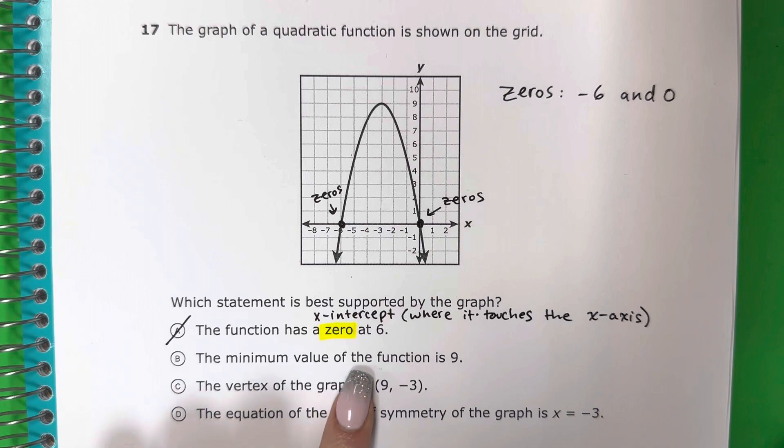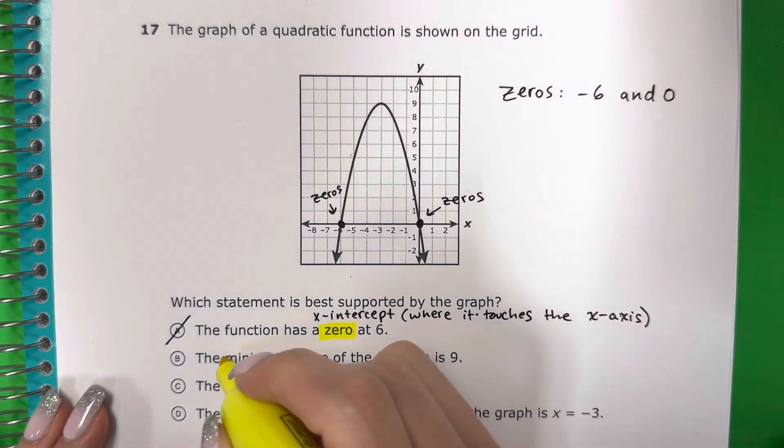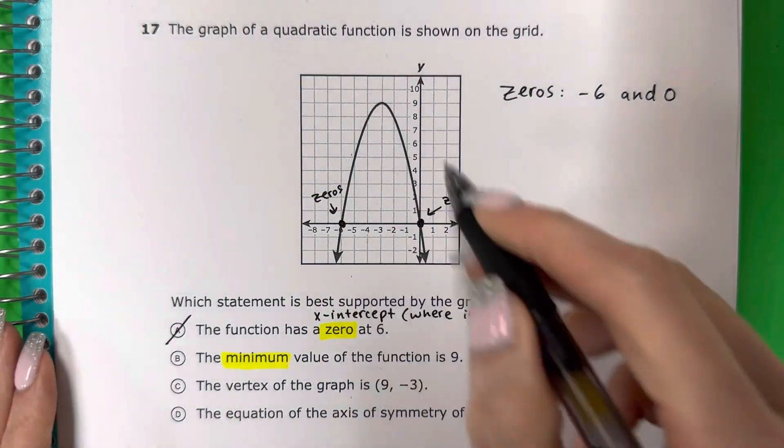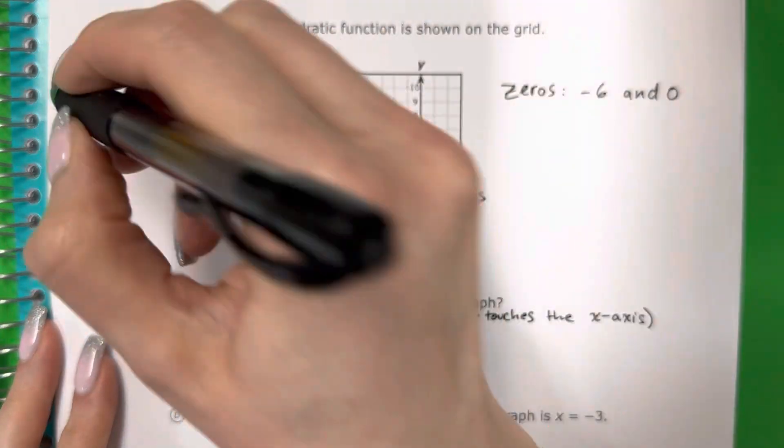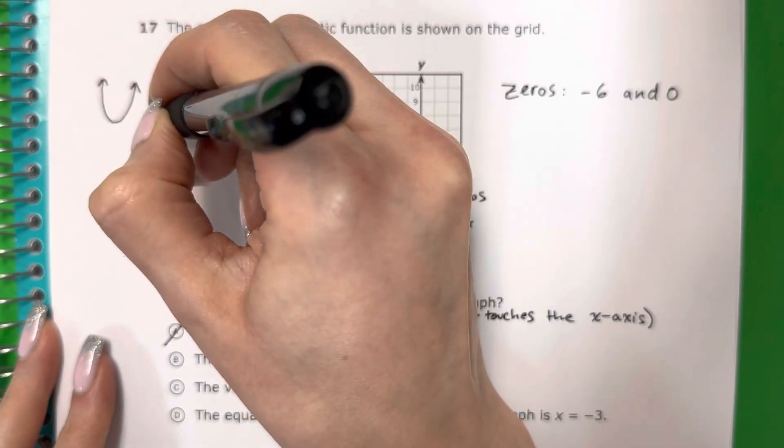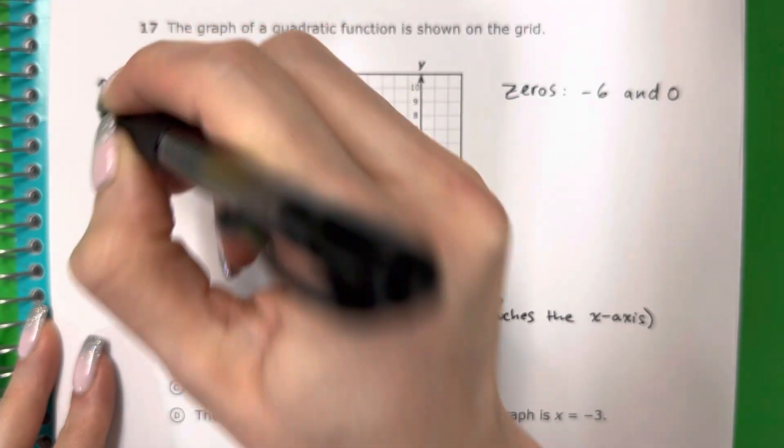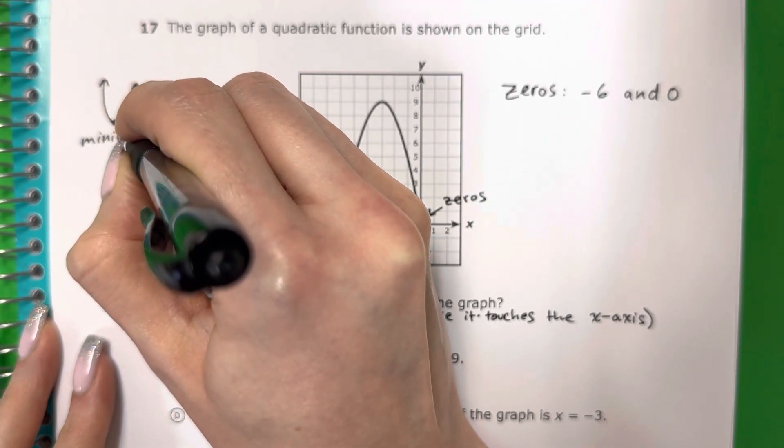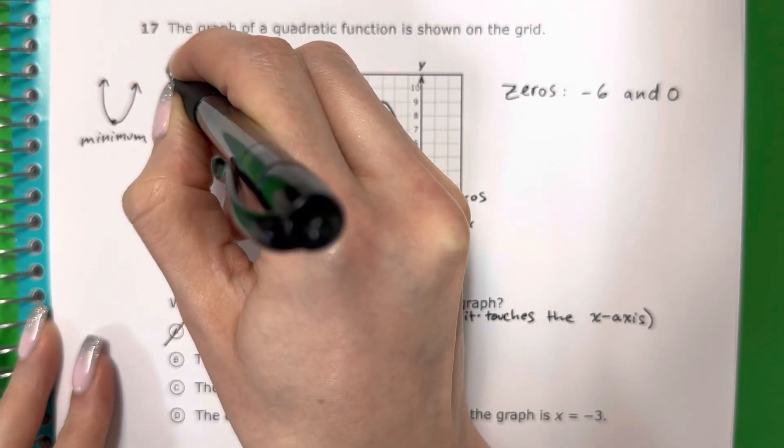The minimum value of the function is 9. Let's see what is minimum. So there's two types of parabolas, correct? So there's this one and there's this one. This one has a minimum. This one has a maximum.